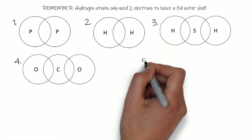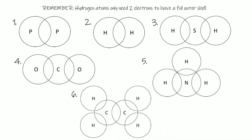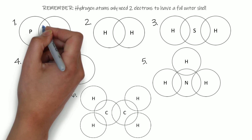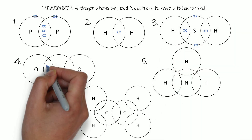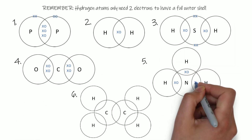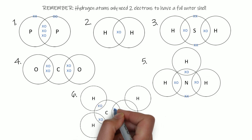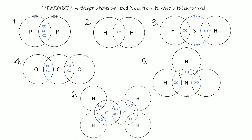Here are a few examples to have a go at — some with two atoms and some with more than two. Use your periodic table if you're unsure what group they're in. Here are the answers: phosphorus is in group five so it needs to gain three and forms three bonds; hydrogen only wants to gain one; sulfur is in group six and needs to gain two; carbon is in group four and needs to gain four; nitrogen is in group five so it needs to gain three; and carbon in group four needs to gain four.